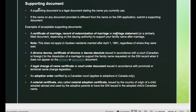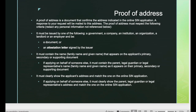The supporting document is a legal document that states the name you currently use. If the name on any document provided is different from the name on the SIN application, you need to submit a supporting document. Examples include a certificate of marriage, divorce decree, certificate of divorce, legal name change certificate, court order, adoption order certified by a Canadian court, or a notary certificate (also called a notary adoption certificate).